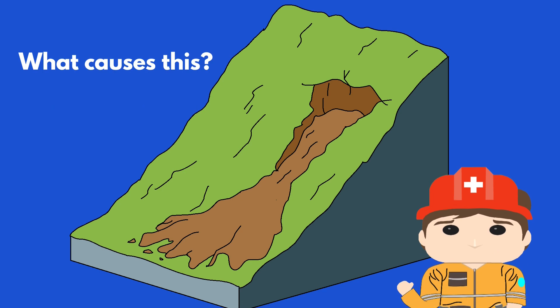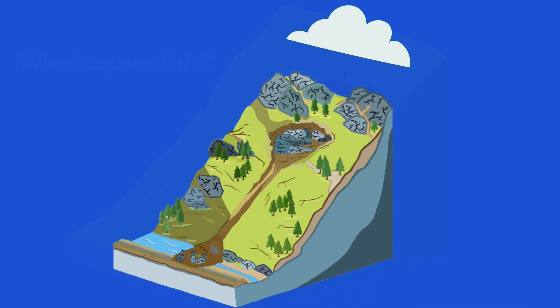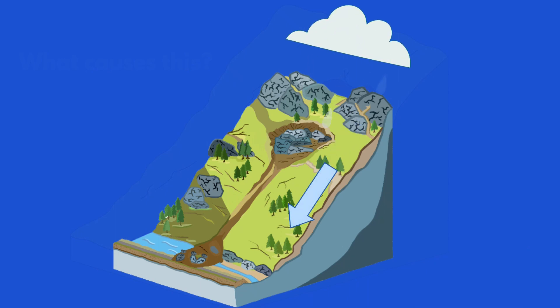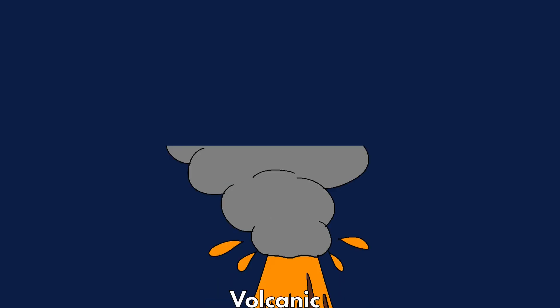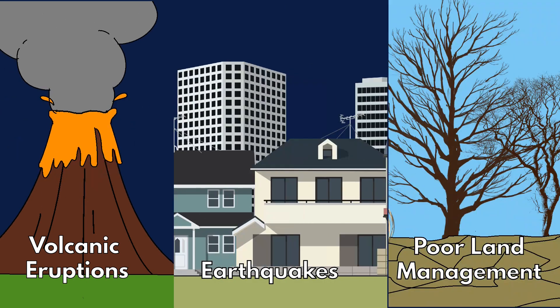Debris flows can be triggered by numerous factors. They result from pouring rainfall where water will wash materials from a slope, or when water removes materials from a burned stretch of land, volcanic eruptions, earthquakes, and poor land management.